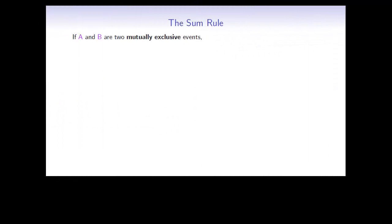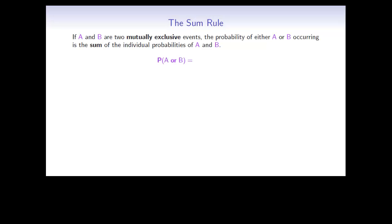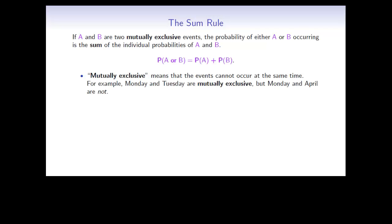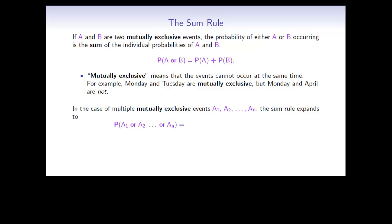Now the sum rule. If A and B are two mutually exclusive events, then the probability of either one or the other occurring is the sum of the individual probabilities for A and B. In other words, the probability of A or B is the same as the probability of A plus the probability of B. Mutually exclusive events means that the events cannot both occur at the same time. For example, Monday and Tuesday would be mutually exclusive, but Monday and April would not be. The sum rule can also be applied if you have several events, as long as they are all mutually exclusive — just add each of the different mutually exclusive events to get the total probability.